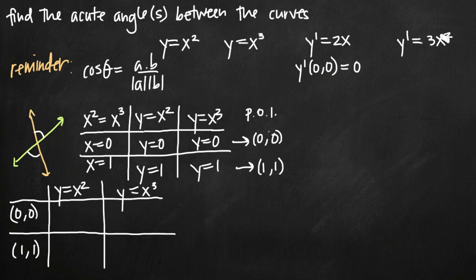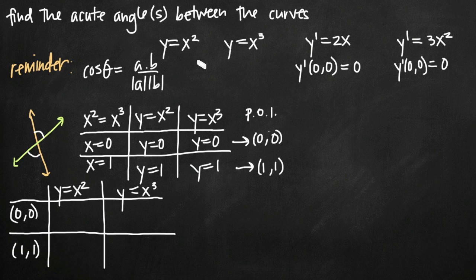If I take the derivative of y equals x cubed and use the power rule, I get y prime equals 3x squared. Plugging in the point (0, 0), I get y prime equals 3 times 0 squared, which is just 0. Remember, the formula for the equation of a line in point-slope form is y minus y₁ equals m times x minus x₁, where m is the slope and (x₁, y₁) is the coordinate point.